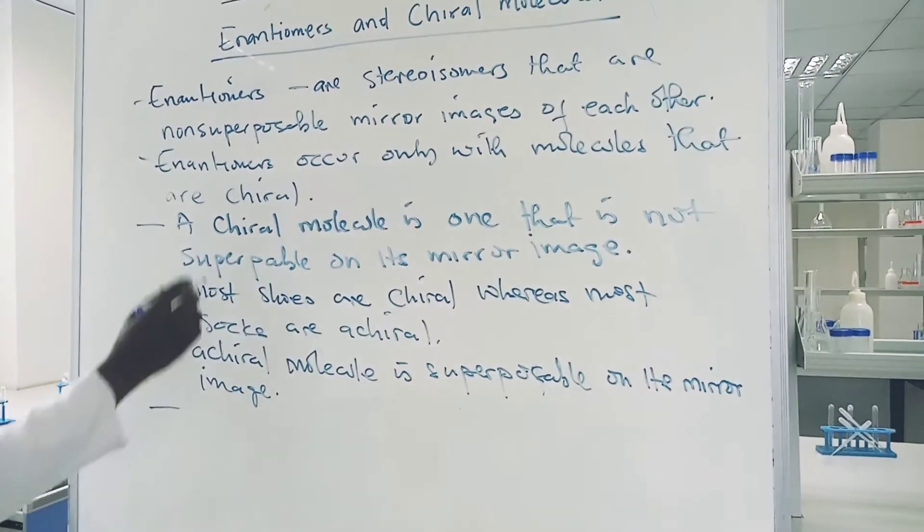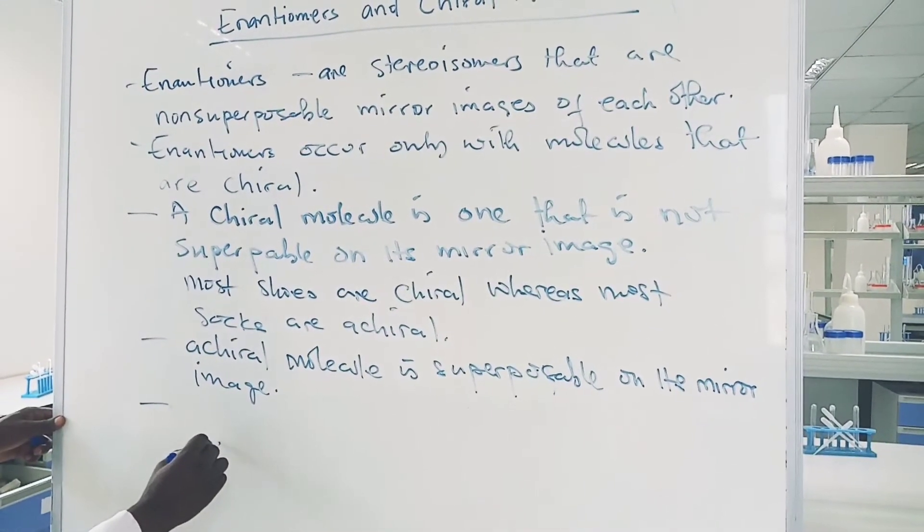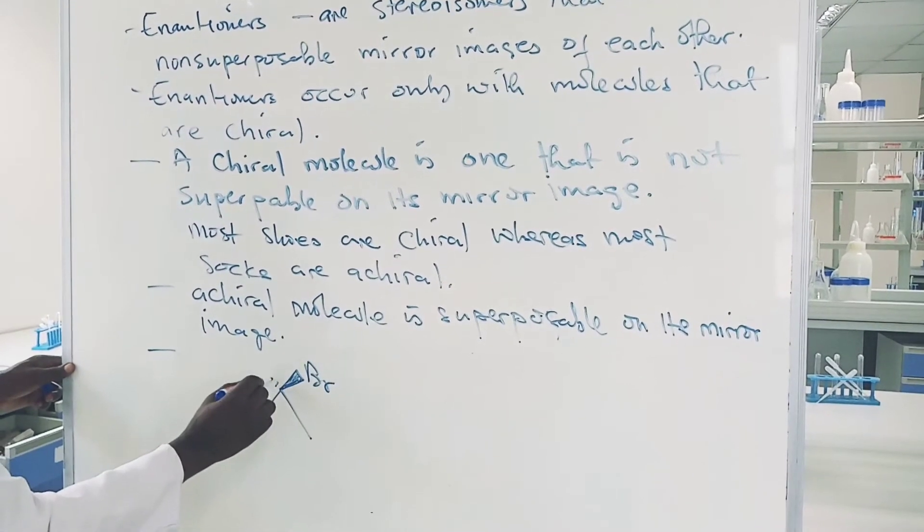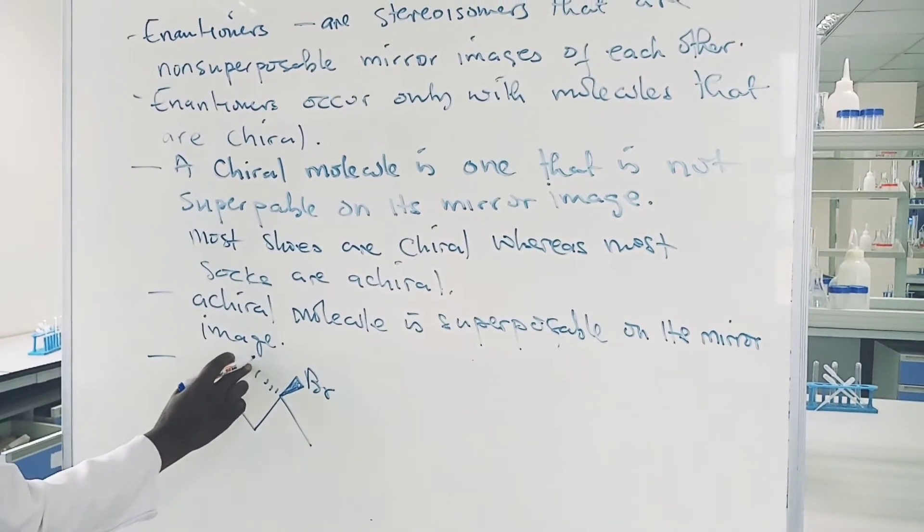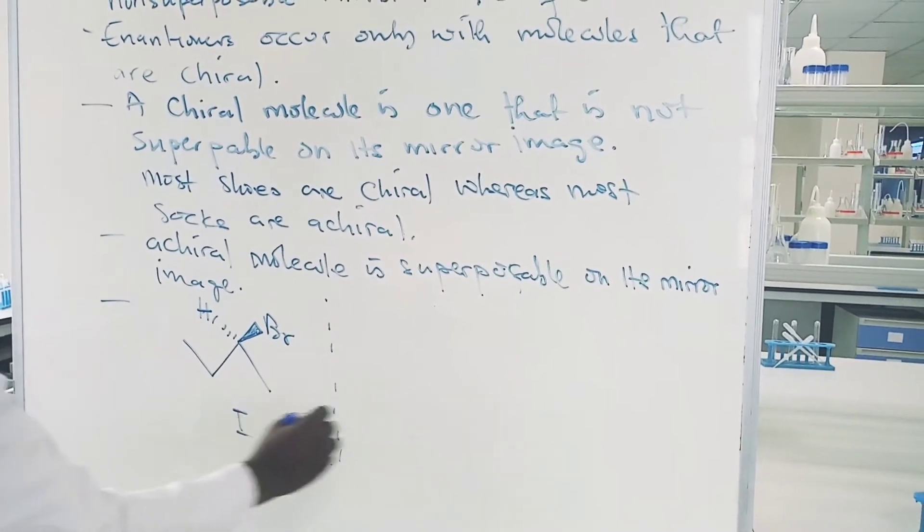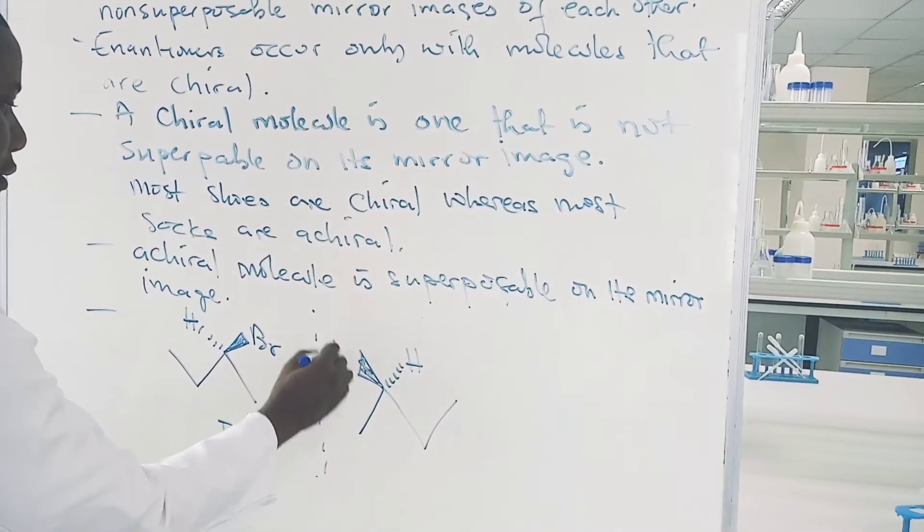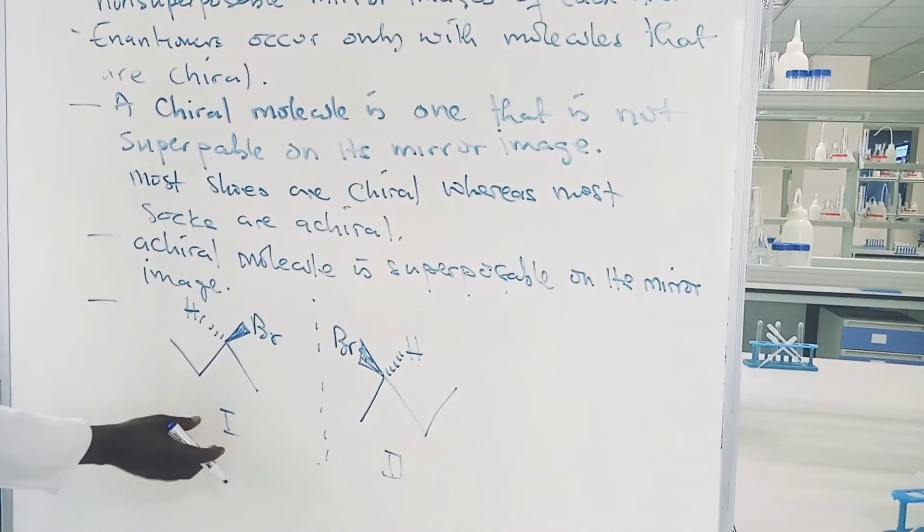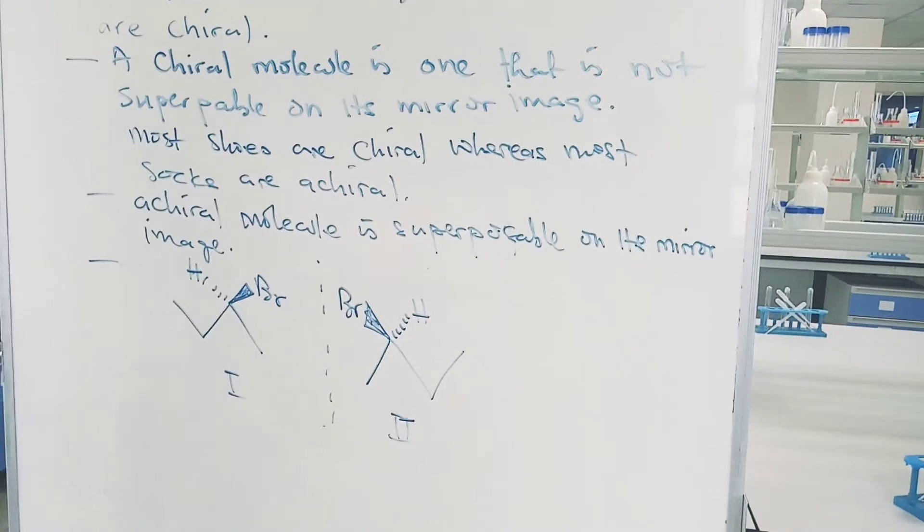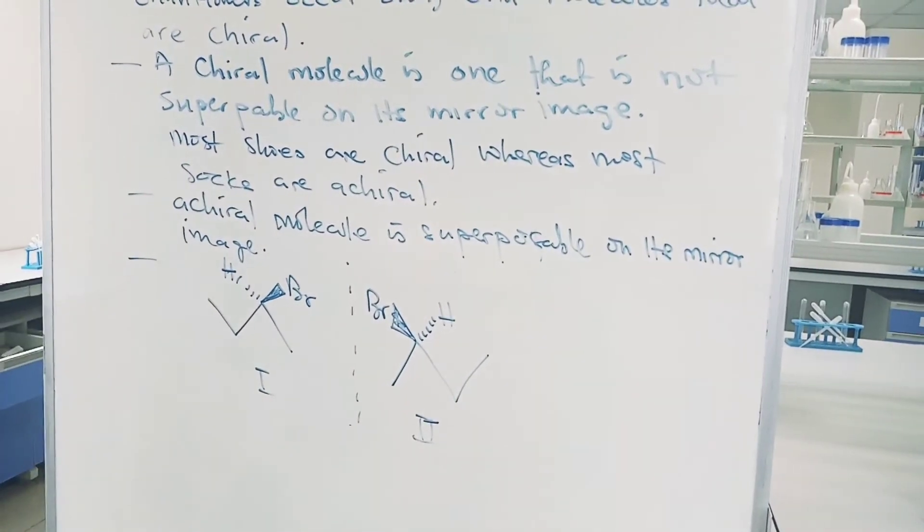An example of a chiral molecule that we may look at is 2-bromobutene. So let's get the mirror image for this. When molecule 1 is held before a mirror, molecule 2 is seen. The two are non-superposable. So the object and its image are non-superposable.